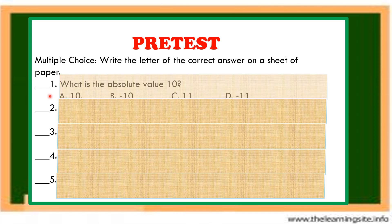Number 1. What is the absolute value of 10? Letter A, 10. Letter B, negative 10. Letter C, 11. Letter D, negative 11.